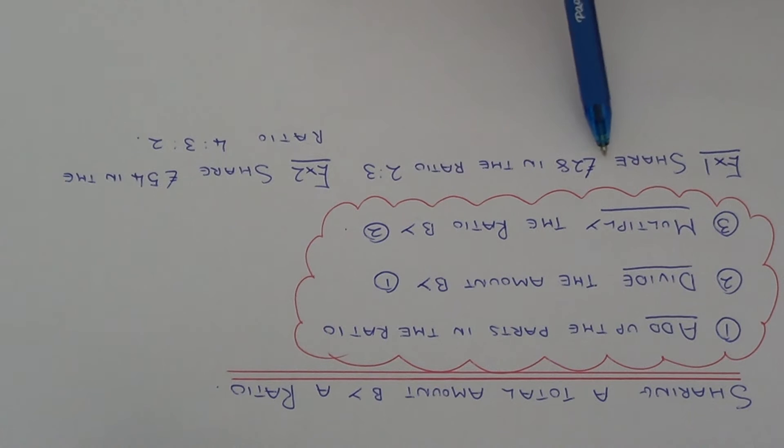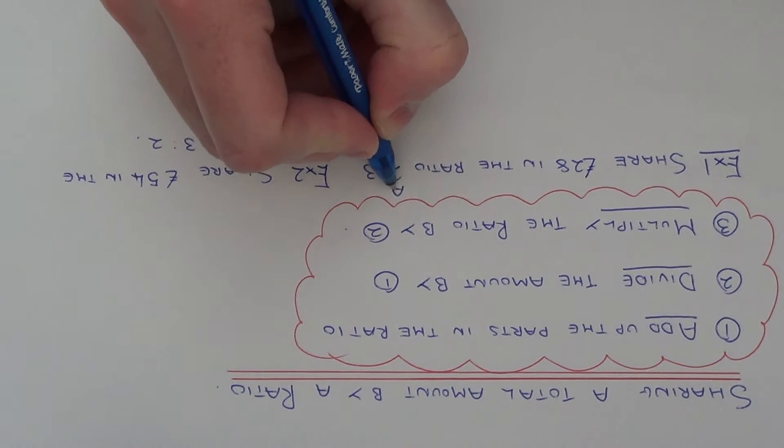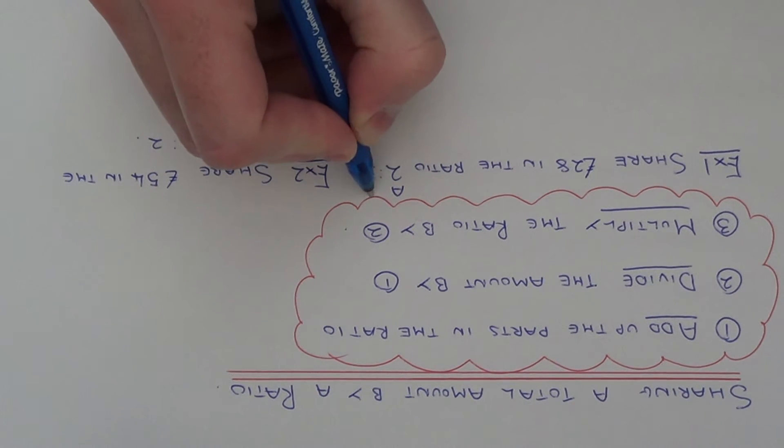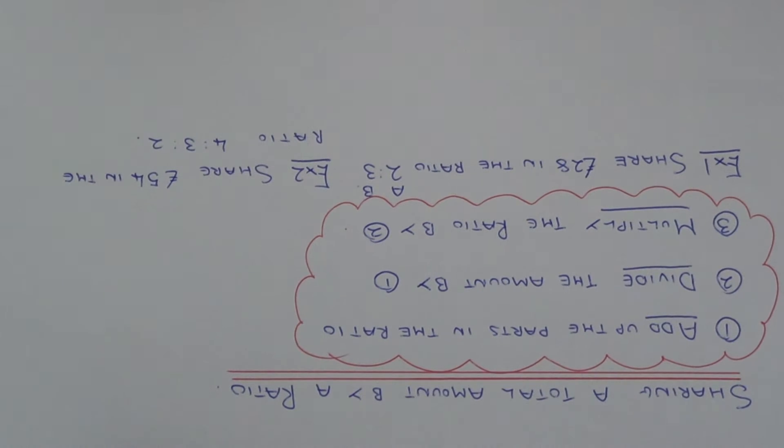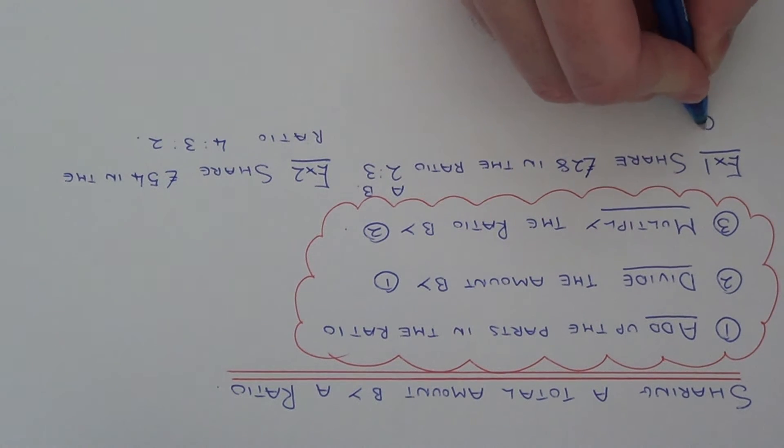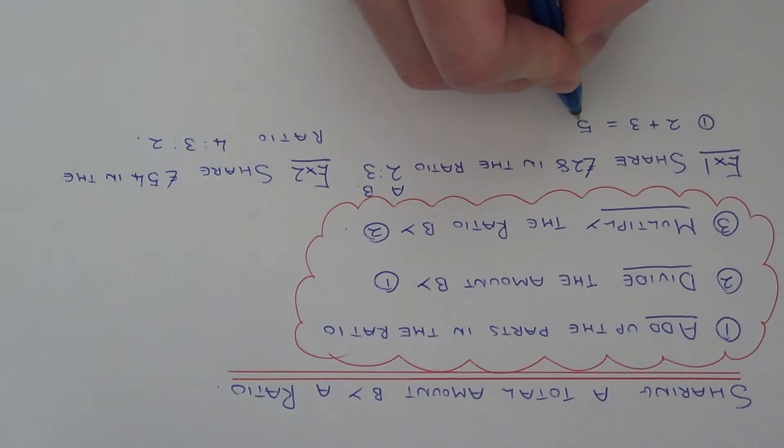So example one we've got to share £28 between two people in the ratio two to three. So person A is getting two parts and person B is getting three parts of the money. So the first thing we need to do then is add up the parts in the ratio. So if we go two add three which is five.